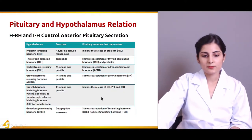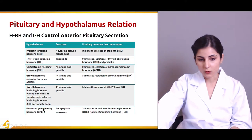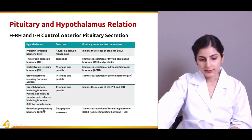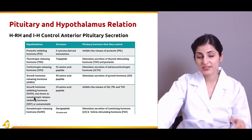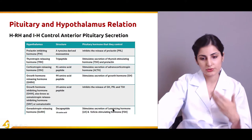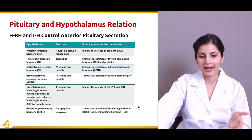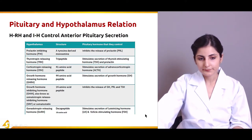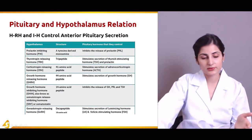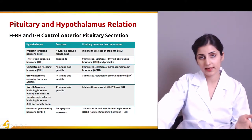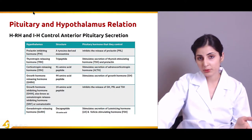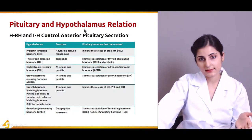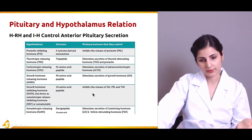Finally, gonadotropin-releasing hormone stimulates the secretion of luteinizing hormone and FSH. These are the names of the inhibiting and releasing hormones of the hypothalamus, which influence the secretion of the anterior pituitary.